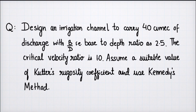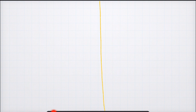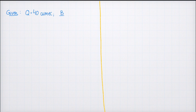The question is: design an irrigation channel to carry 40 cumec of discharge with b/d (base to depth ratio) equal to 2.5, the critical loss ratio m equal to 1, and assume a suitable value of Kutter's roughness coefficient. Use Kennedy's method. The given parameters are: discharge = 40 cumec, b/d = 2.5, and m = 1.